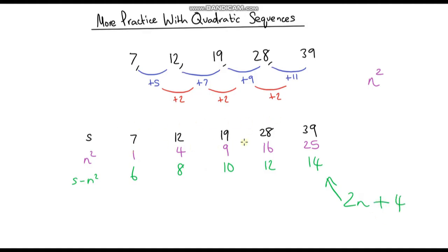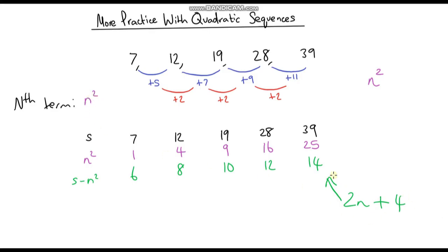Now if we look at our original sequence — the one we started off with — it's just composed of our quadratic sequence and our arithmetic sequence. If we add these two sequences together we get our original sequence back. So the nth term of our original sequence is just the quadratic part plus the arithmetic part. So it's going to be n squared plus 2n plus 4. And that is the nth term of our quadratic sequence.